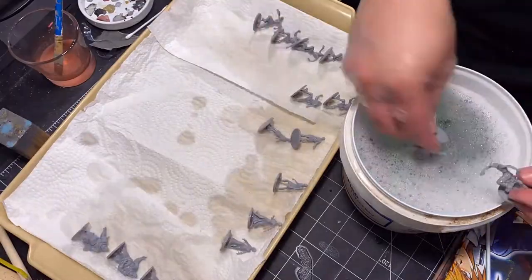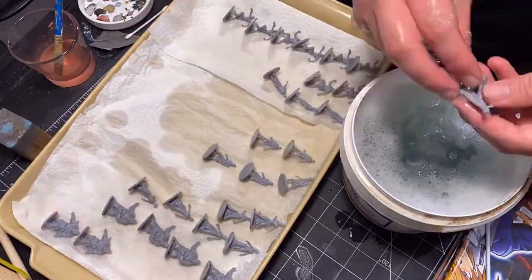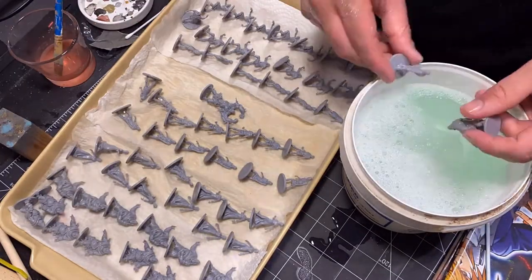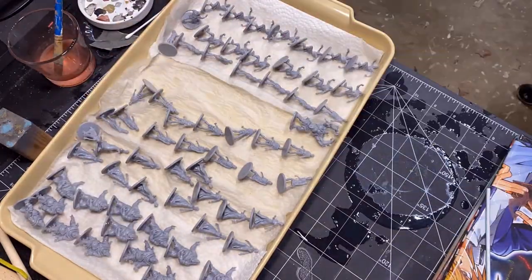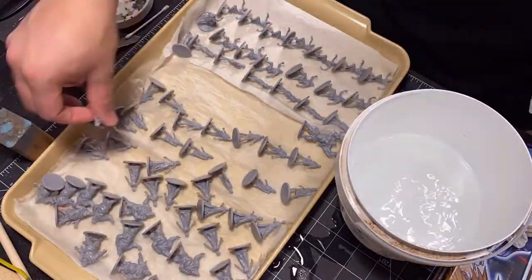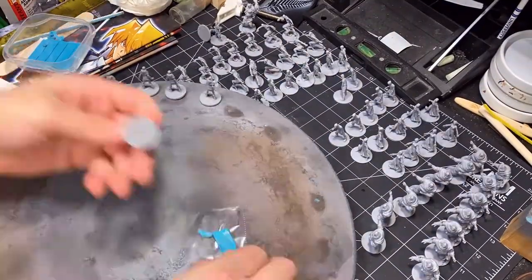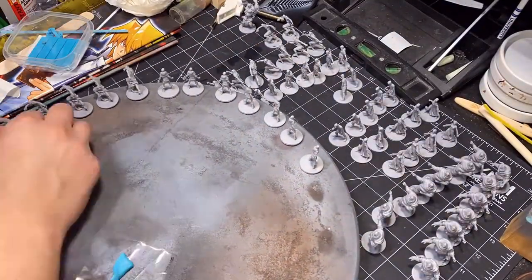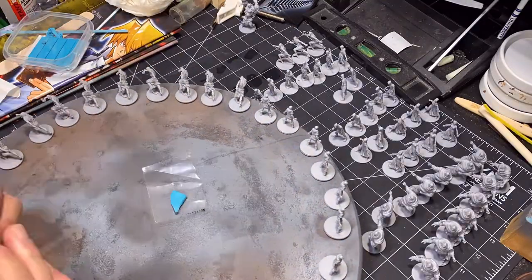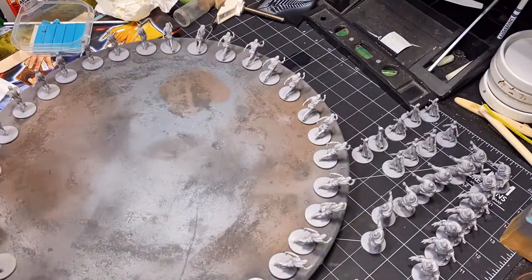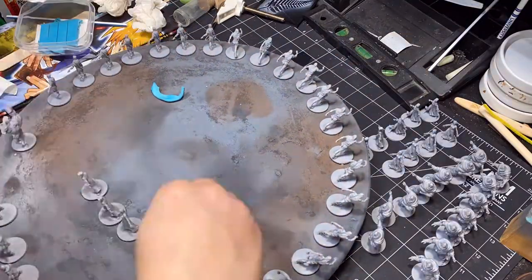Just cleaning up all the models. I like to do them in order that way you're looking for the same spots on each model, so just a little bit easier there. Putting them all in hot water and soap, giving them a little rinse. We're trying to get all that mold release agent or any sort of grease off, so we get clean adhesion with the primer.